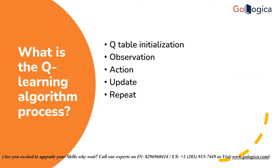Now let's see what are the steps that make up the Q-Learning algorithm. Through interactive exploration of the surroundings and Q-table updating in response to rewards, the agent learns via the Q-Learning algorithm process. The following steps are involved: first, starting a Q-table — to track each action in each state and the corresponding progress, the first step is to establish a Q-table.